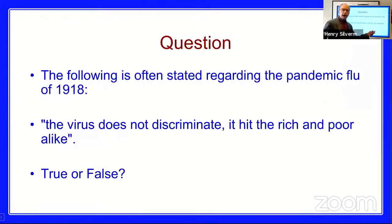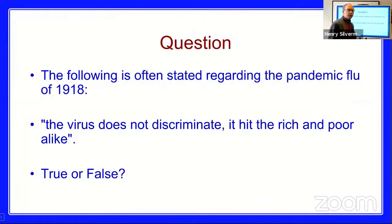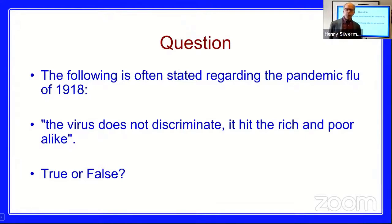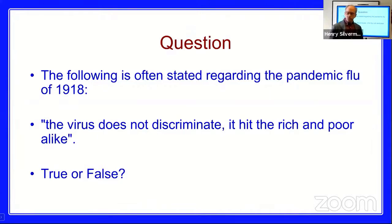I'd like to first ask a question on the poll here. Regarding the pandemic of 1918, the following is often stated regarding that pandemic flu: 'The virus does not discriminate. It hit the rich and poor alike.' Please vote true or false. We'll give a few seconds for you to vote — we don't see this in real time, so we'll close the poll in about 15 seconds.